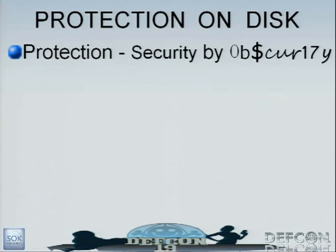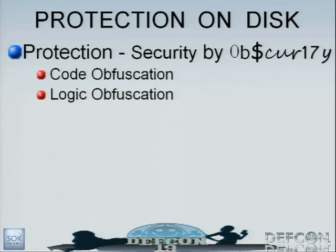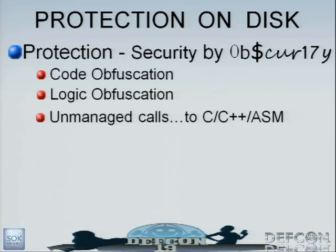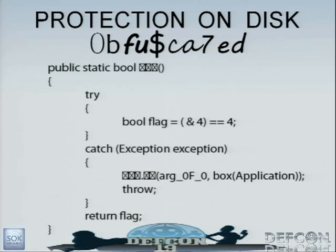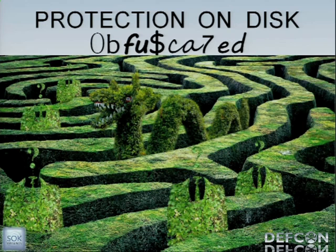Security by obscurity — this is what every single person that has heard Microsoft's protection pitch will say. There's code obfuscation, logic obfuscation, unmanaged calls that Microsoft uses a lot, shells, packers — all of these things. This all shuts down decompilation or slows it down. Obfuscation: instead of using a proper name, they put something that's hard to read; instead of returning true or false, they do something a little bizarre. Doesn't obfuscation stop you from getting source code? Yes, but that's still source code — it's going to take me an hour instead of five minutes. It slows you down. You can find your target, but it might take a little bit of time.